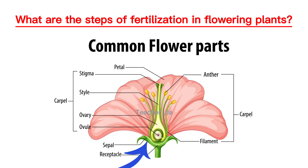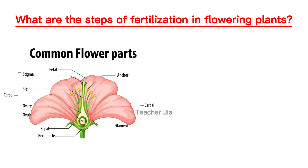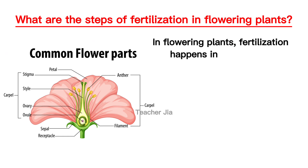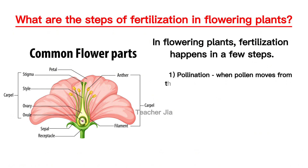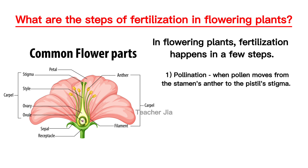In flowering plants, fertilization happens in a few steps and we're going to look into those steps. The first one is pollination. Pollination occurs when pollen moves from the stamen's anther to the pistil's stigma.